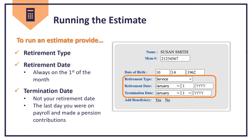Estimates within two years of your retirement date will use salary and service credit information already posted to your account at the time of the estimate. For any estimate date after two years and up to 10 years, you'll need to input your salary and service credit information, which we will review in a few minutes.